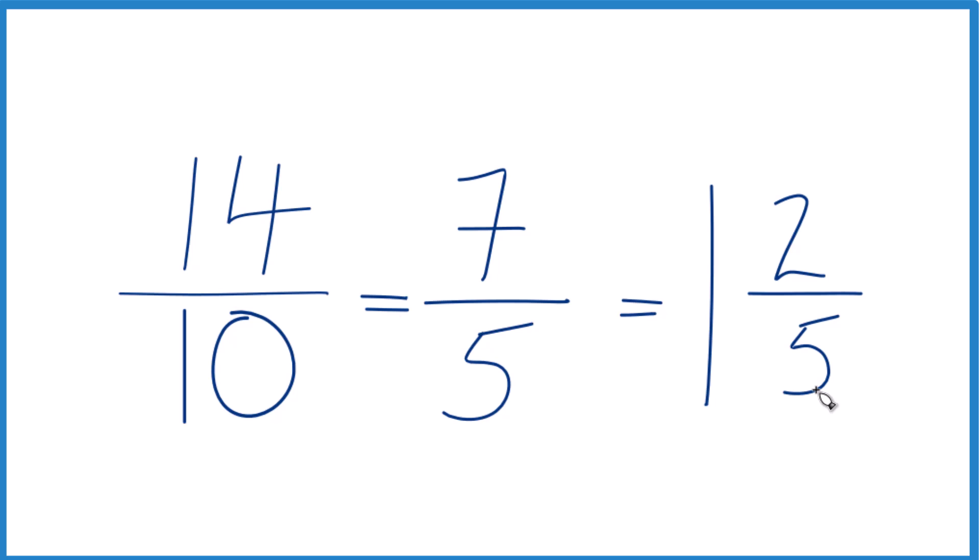1 times 5, that's 5, plus 2, that's the 7, and then the 5 here, we just keep that the same.